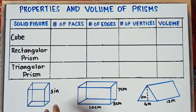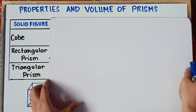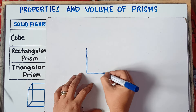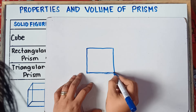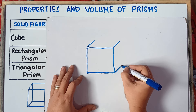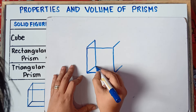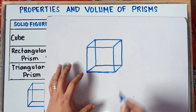So this will be the illustration for the cube, and we're told to find the volume for the rectangular prism and triangular prism as well. So let's start with the cube. When you draw a cube, the first step is you draw a square. So let's draw a square, and then you draw these connecting lines to form a cube. So we already have our cube.